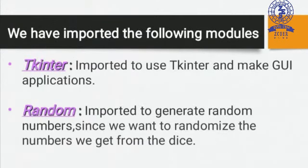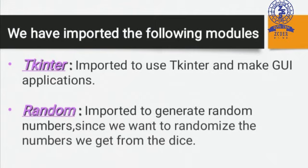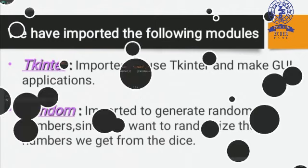For our project, we have used two modules. The first one is tkinter and the other one is the random module. tkinter is a Python package which comes with many functions and methods that can be used to create a tkinter application. The random module is a built-in module to generate pseudo-random variables. It can be used to perform actions randomly, such as getting a random number, selecting a random element from a list, or shuffling elements randomly.